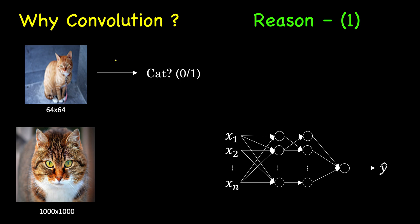One reason is the parameter count. Let's say we want to create a simple object classifier. For a very small image — 64×64 pixels — we have 4096 pixels times 3 RGB channels, giving roughly 12,000 values. You can still work with a plain neural network where each pixel is treated as a feature, and the network can learn whether a cat is present or not.